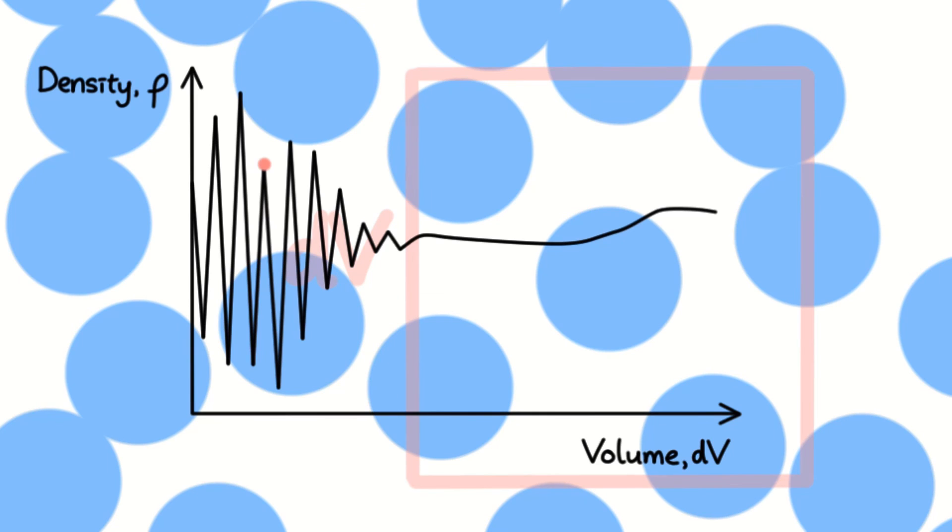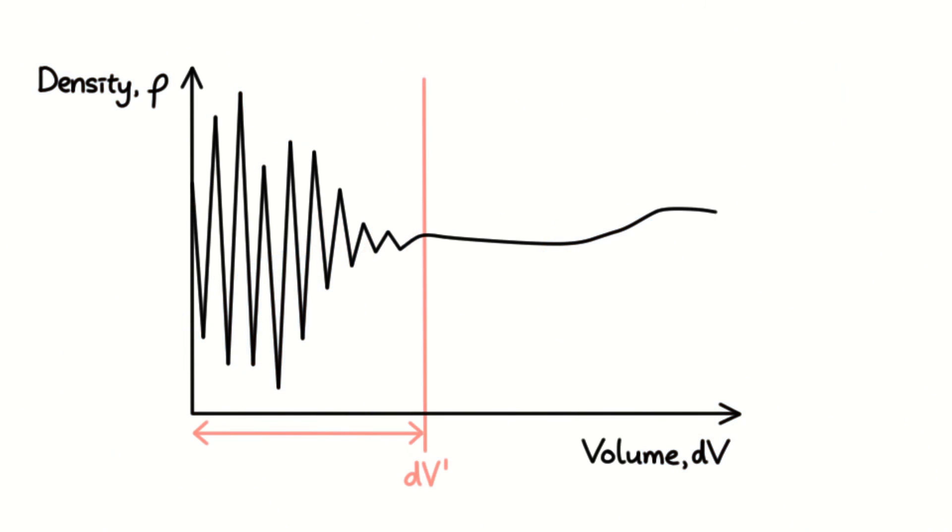For example, in this frame, the density of dV is basically that of a molecule. As the volume expands to larger than a molecule, the density drops, as the volume is now not completely filled by the molecule, but also has some vacuum in it. As we expand the volume further, other molecules cross into the volume, increasing density. This explains the erratic result of density when considering very small volumes. This is called microscopic uncertainty.